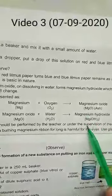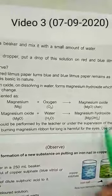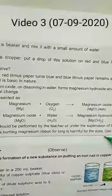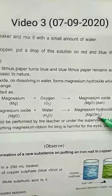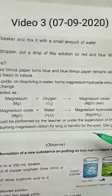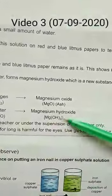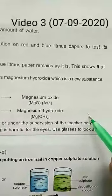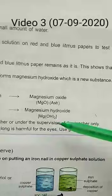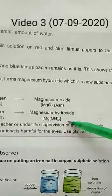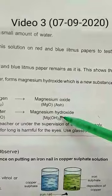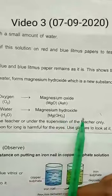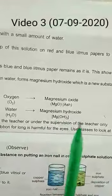Now we check whether magnesium hydroxide is acidic or basic in nature using litmus paper. If it is basic, it will turn red litmus to blue. If it is acidic, it will turn blue litmus to red. On putting the litmus paper into this solution, we observe red litmus turns blue — so Mg(OH)₂ is basic in nature.